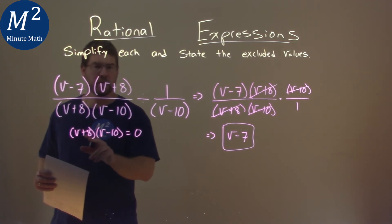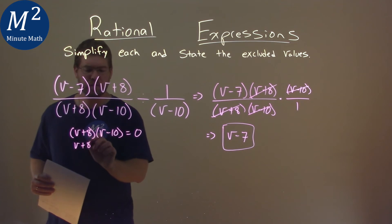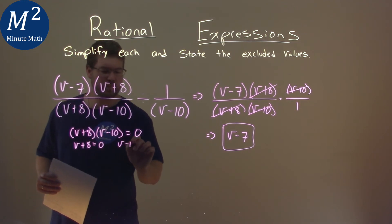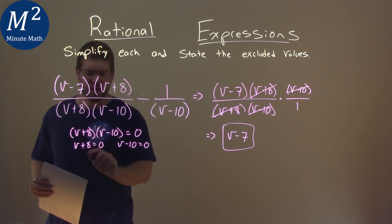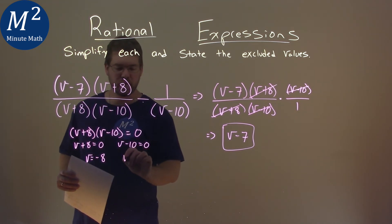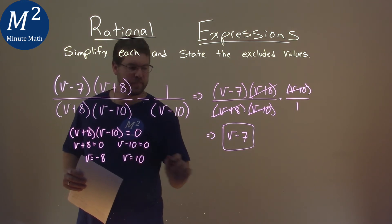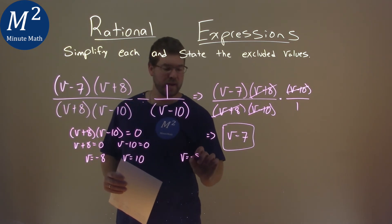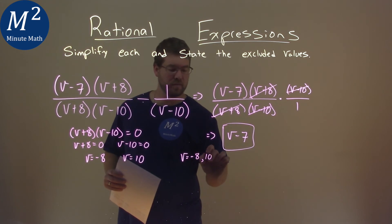We can set both parts now individually equal to 0, and then solve. So we subtract 8 from both sides, and we have negative 8. Add 10 to both sides, and v equals positive 10. And so our two excluded values are negative 8 and positive 10.